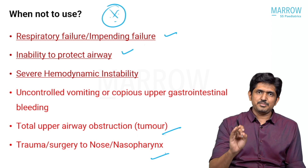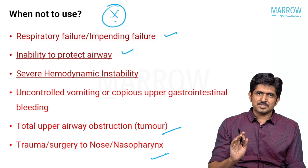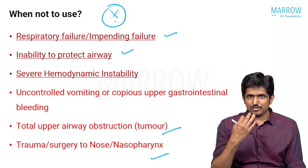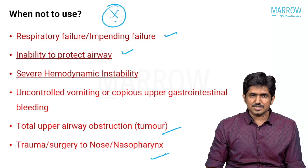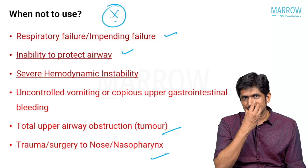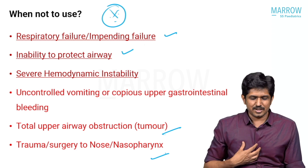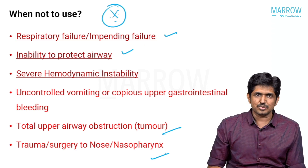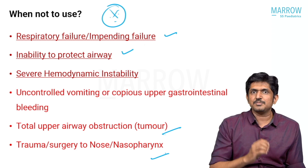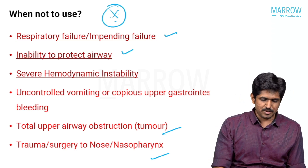To summarize contraindications: low GCS, impending respiratory failure, severe hemodynamic instability, orofacial trauma or orofacial surgeries, bleeding in the nasal cavity or GI cavity, and upper airway obstruction due to a fixed mass such as a tumor — HFNC should not be used in any of these situations.